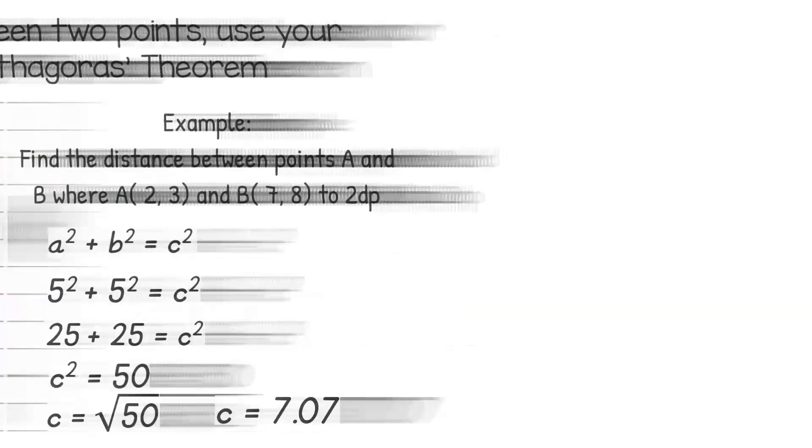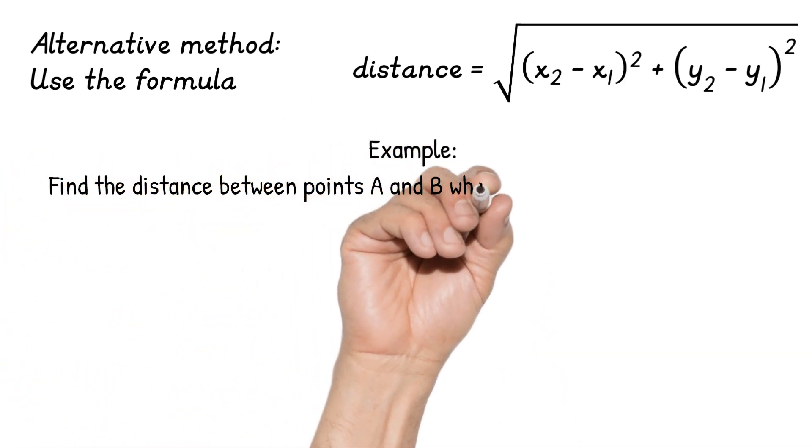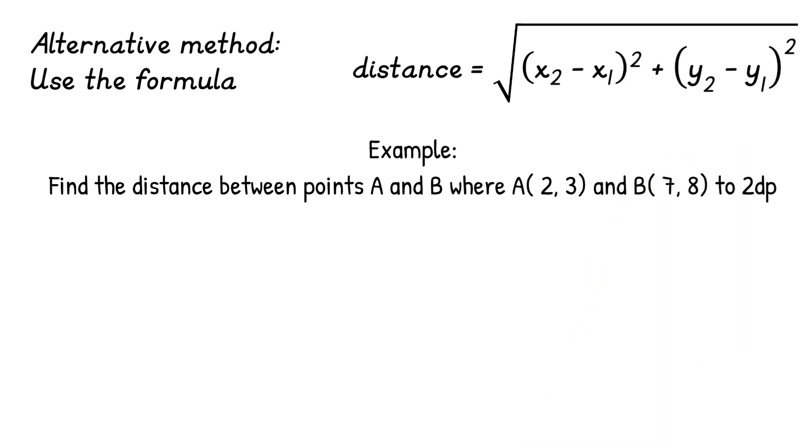Now we're going to do the exact same question, but we're going to do it using a formula. So the formula is again applying the Pythagoras theorem. This is the formula that you're going to use - it looks a little bit complicated, but essentially it's saying find the difference in the x's and square it, find the difference in the y's and square it, add them, and square root.